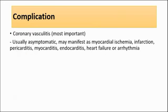The most important complication of Kawasaki disease is coronary vasculitis causing coronary artery aneurysm. This vasculitis is usually asymptomatic but may manifest as myocardial ischemia, infarction, pericarditis, myocarditis, endocarditis, heart failure, or arrhythmia. This complication usually occurs within two weeks of illness and affects up to 25% of untreated children, which is why prompt treatment is important.